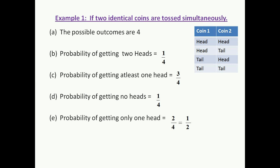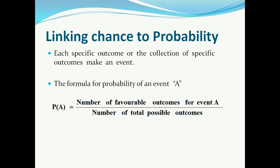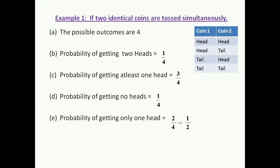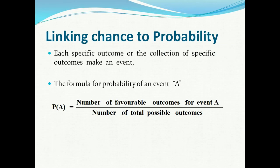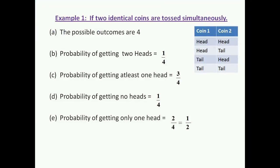For part D, probability of getting no heads — no head should be considered. The only possibility is the last case where both coins show tail. So there is only one favourable outcome. Number of favourable outcomes is 1 and total possible outcomes are 4. Therefore, probability of getting no heads is 1/4.